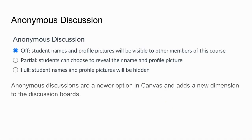A newer feature in discussions is anonymous discussion, where you can control the level of anonymity. Off means names and profile pictures are visible. Partial means students can choose to reveal themselves. Full anonymous discussion means all student names and profile pictures are hidden — it forces the content of the discussion to be the focal point rather than who said it.